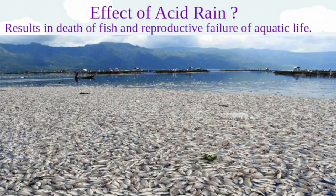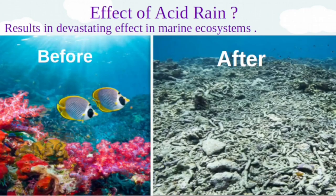Aquatic life, especially fish, are badly affected by lake acidification. Aquatic animals suffer from toxicity of metals such as aluminum, mercury, manganese, zinc and lead, which leak from the surrounding rock due to acid rain. It also results in reproduction failure and killing of fish. Many marine ecosystems like coral reefs have devastating effects due to acid rain, and many lakes have also become fishless.